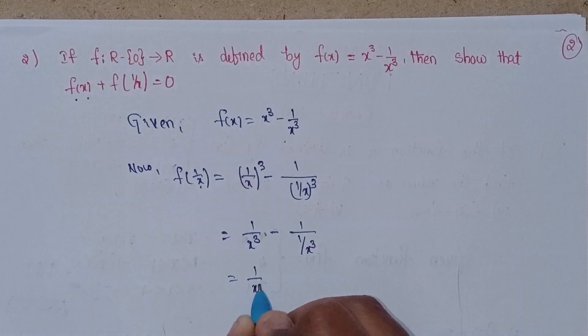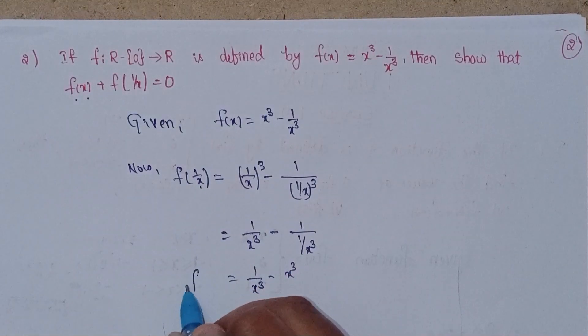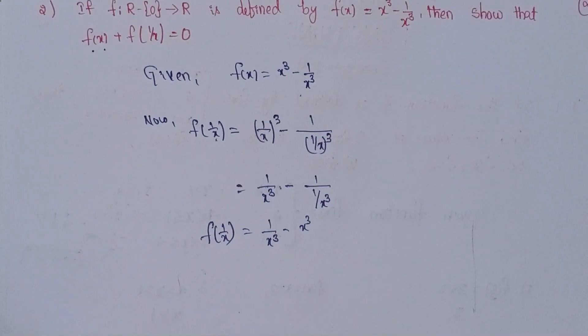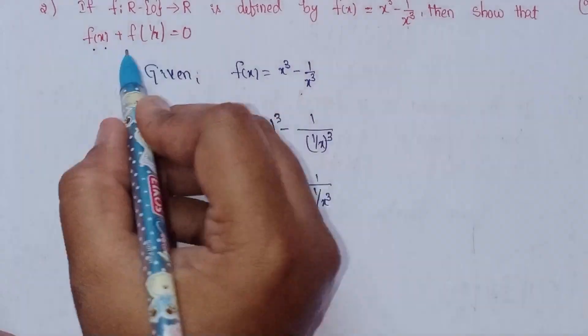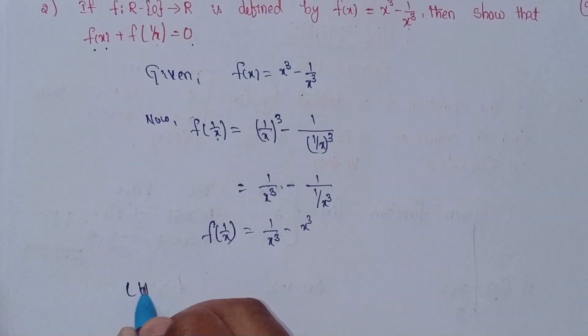So f(1/x) = 1/x³ - x³. This is our result for f(1/x).